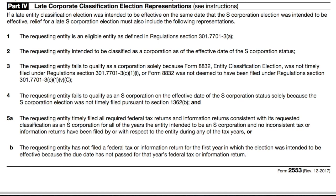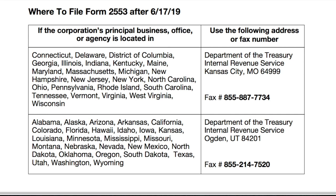That's it for Form 2553. You can mail or fax the form to the IRS as indicated for your state on the cover page of the form. There's no fee to file Form 2553, and the IRS should notify you within two months whether your S-Corp tax election was accepted or not. Now that you're an S-Corp for tax purposes, you'll eventually need to file Form 1120-S, which is the informational tax return for S-Corps, and you'll need to provide a Schedule K-1 to your shareholders. Keep in mind that you might also need to fill out additional paperwork with your state in order to be treated as an S-Corp for state tax purposes.